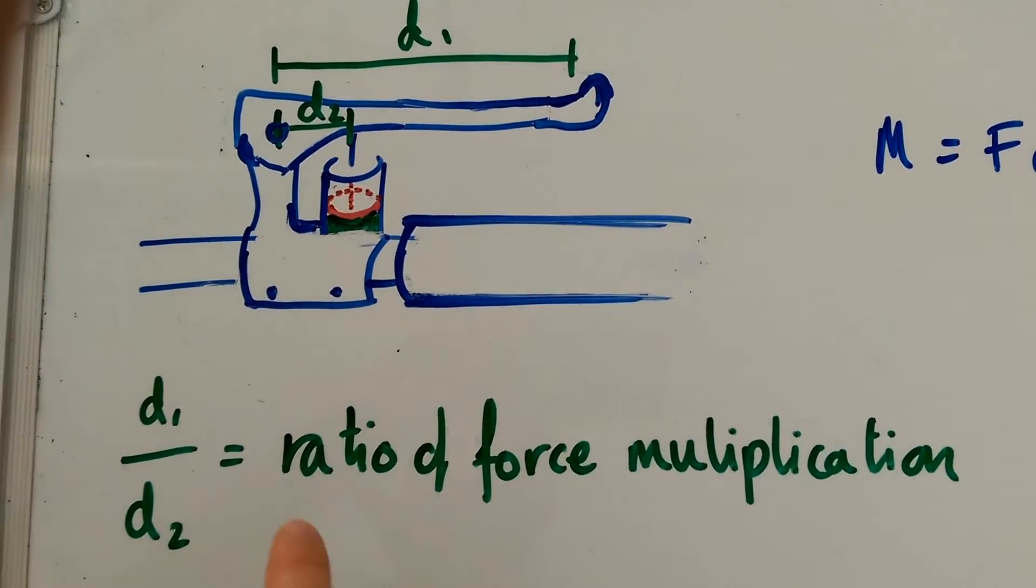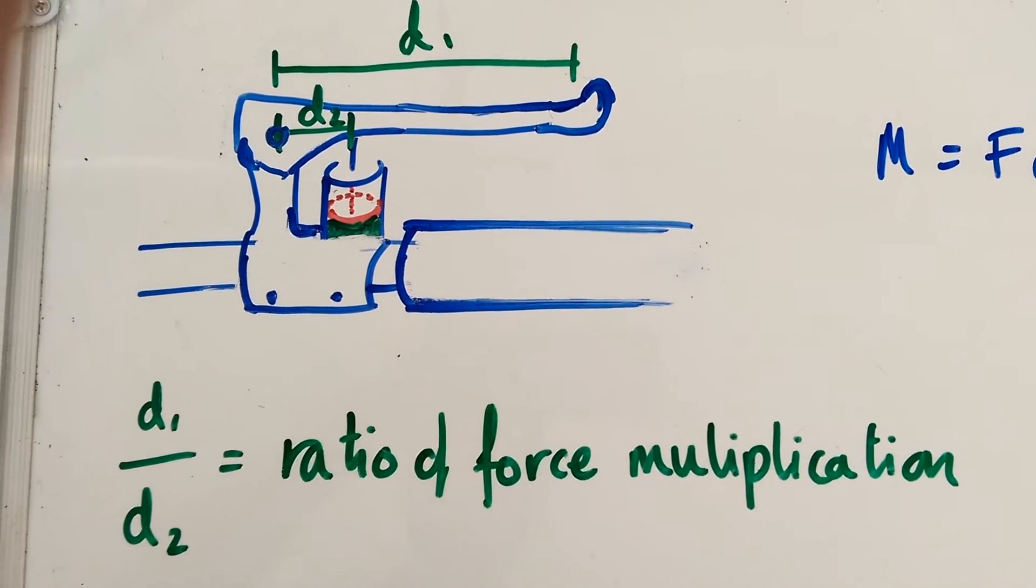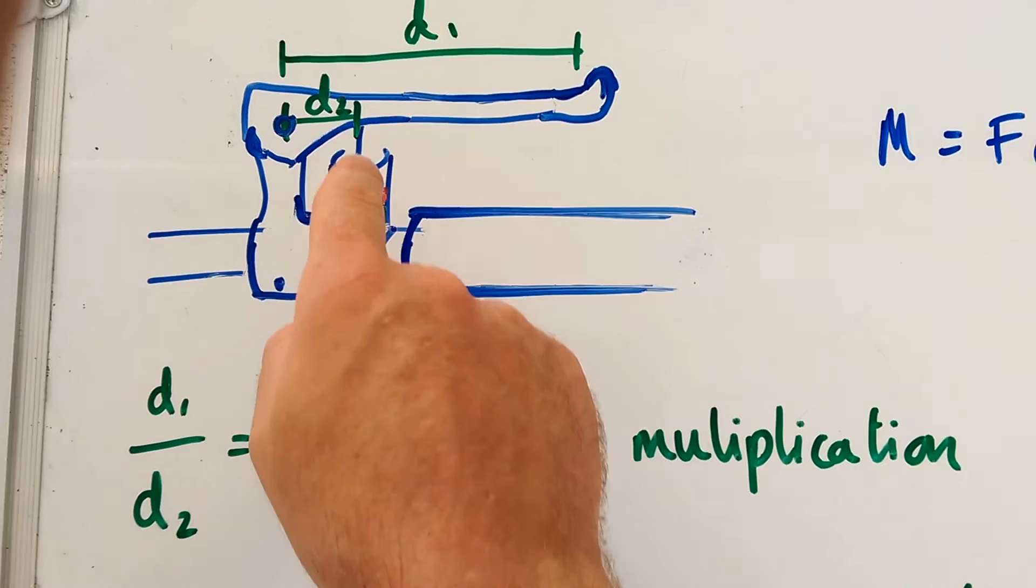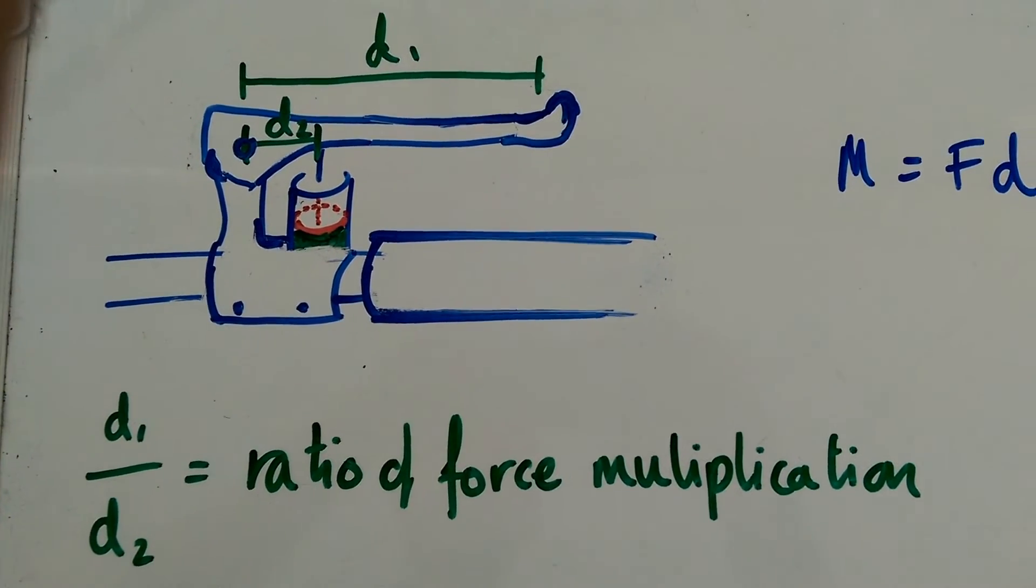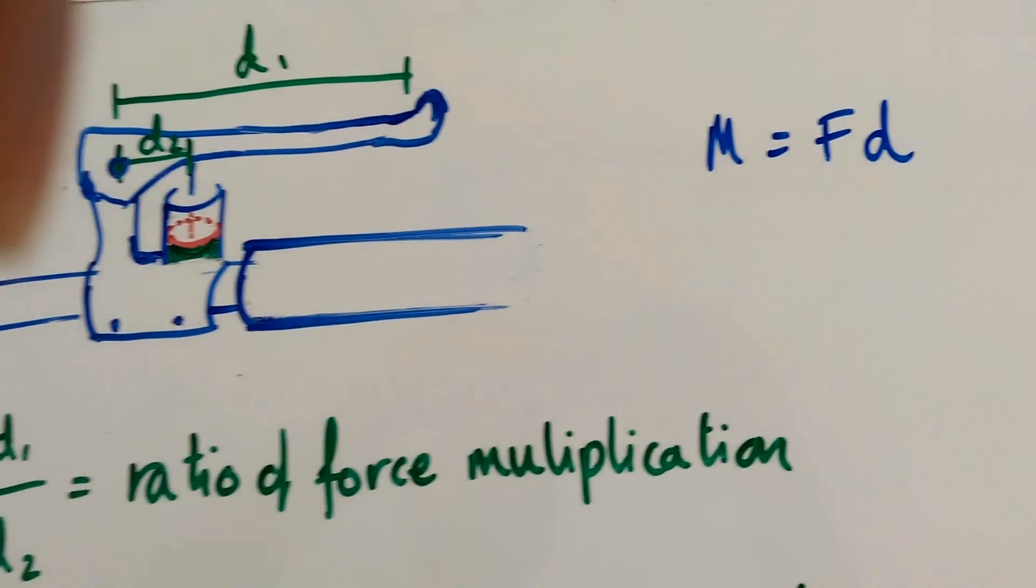And if this length was four times this one, then the ratio would be four, and the ratio of the force here would be much higher, four times higher than the force here. That's all work in front of the equation.